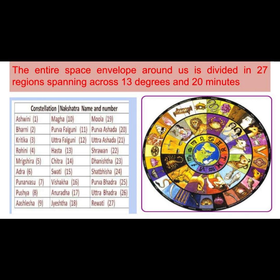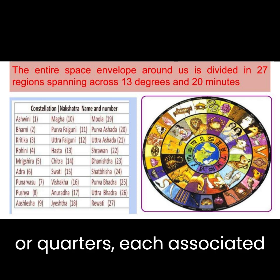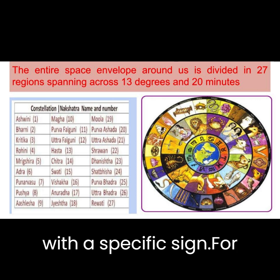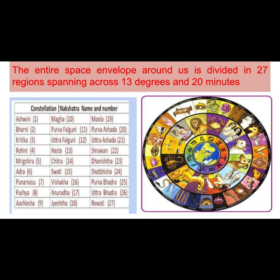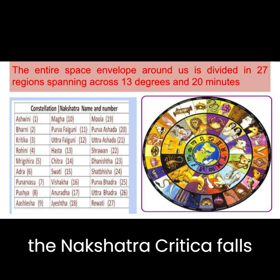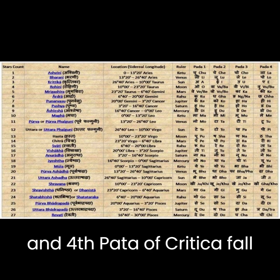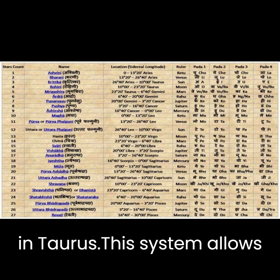The nakshatras are grouped into four padas, or quarters, each associated with a specific sign. For example, the first pada of the nakshatra Kritika falls in Aries, while the second, third, and fourth pada of Kritika fall in Taurus.